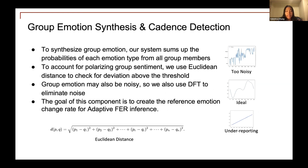In group emotion synthesis and cadence detection, we first synthesize the group emotion by summing up the probabilities of each emotion type from all group members. To account for polarizing sentiment, we use the gradient distance to check for deviation. Since this can be noisy, we also use discrete Fourier transform to eliminate noise. The goal of this component is to create a reference of emotion change rate for adaptive FER inference.